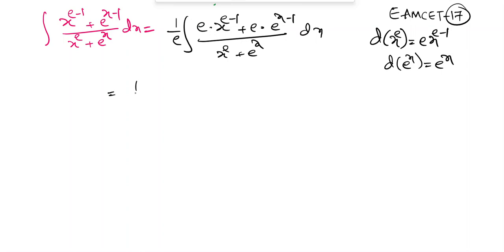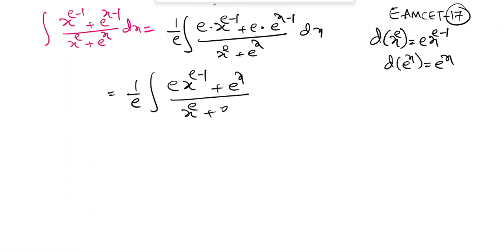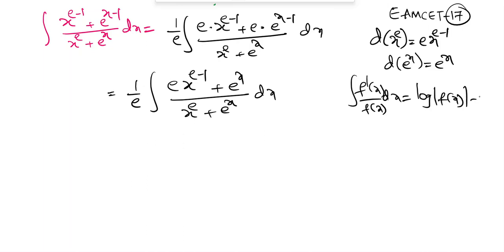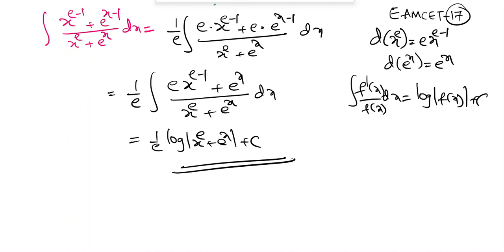The integral becomes (1/e) times integration of (e·x^(e-1) plus e·e^(x-1)) by (x^e plus e^x) dx. This is in the form f'(x)/f(x), whose integral is log|f(x)| plus c. Therefore the answer is (1/e)·log|x^e plus e^x| plus c.